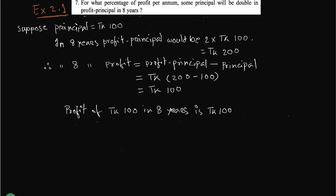Assalamu alaikum, greetings from Talent of Skill. Class 8 English version math, Exercise 2.1, question number 7: For what percentage of profit per annum will a principal be double in 8 years? We have to find the percentage of profit per annum.